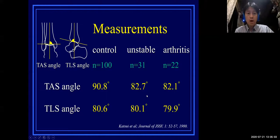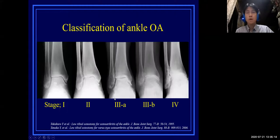I will introduce the research of my senior colleague. The patient with an unstable ankle has various deformities of the distal articular surface that lead to ankle arthritis.